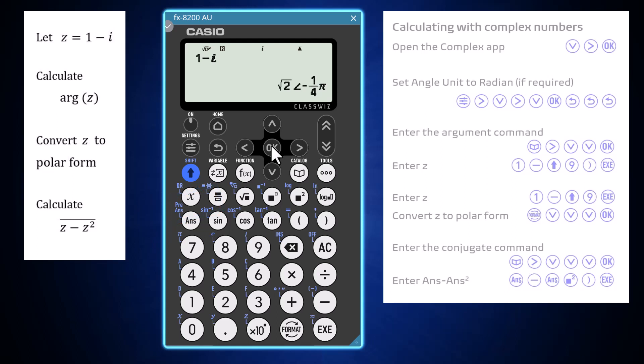Start with the conjugate command, found in the catalogue, arrowing right for complex, arrowing down to conjugate, and choose it by pressing OK.